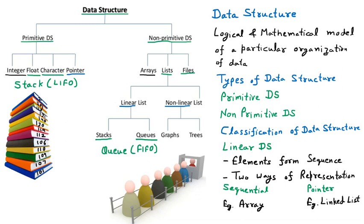Continuing the insertion order: after 131, copies from roll numbers 113, 201, and finally 205 are placed. So the last copy placed on the stack belongs to roll number 205. The order of insertion goes from 101 at the bottom up to 205 at the top — this is the order in which students submitted their assignments.